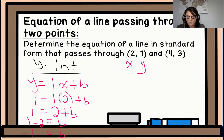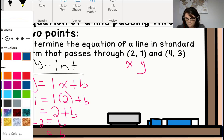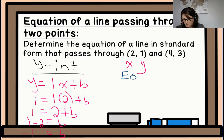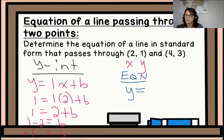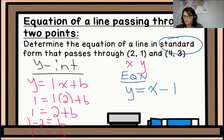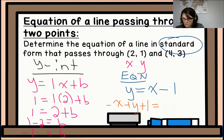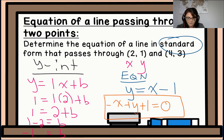Let's put it all together. Our slope was 1 and our y-intercept is negative 1. So y equals x minus 1. Writing it in standard form: negative x plus y plus 1 equals 0. That is the equation in standard form.